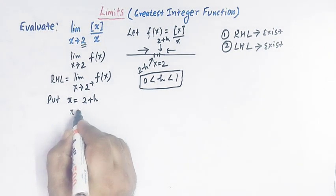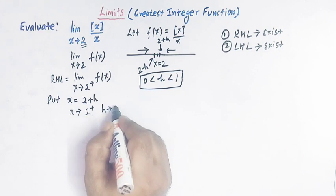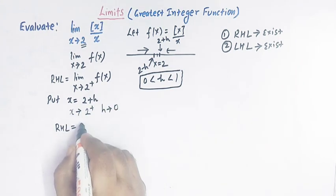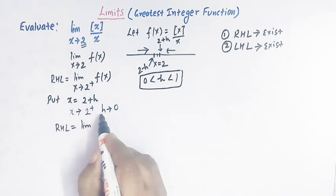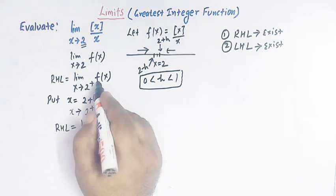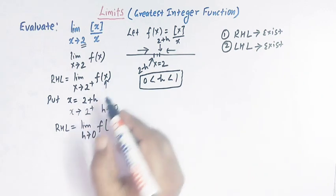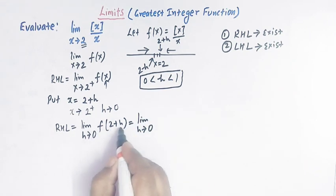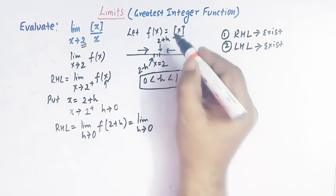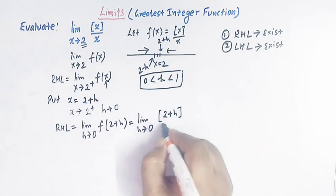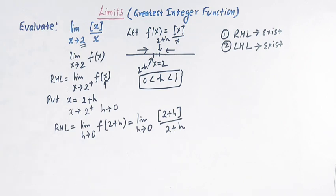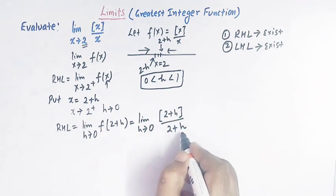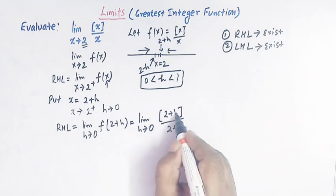When x tends to 2, then h tends to 0. So the right-hand limit can be expressed in terms of h: limit h tends to 0 of f(2 + h). Replacing x by 2 + h, we get the greatest integer of (2 + h) divided by (2 + h). We cannot directly substitute h = 0 here.